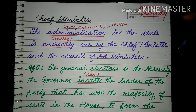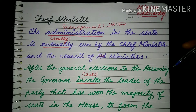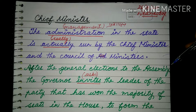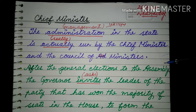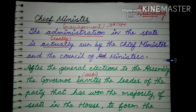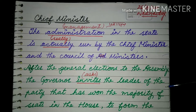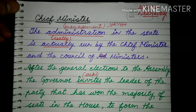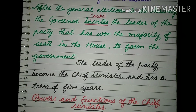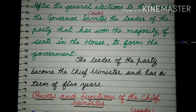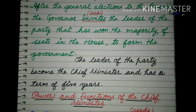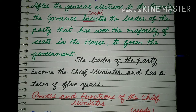After the general election to the assembly, the governor invites the leader of the party that has won the majority of seats in the house to form the government. The leader of the party becomes the chief minister.